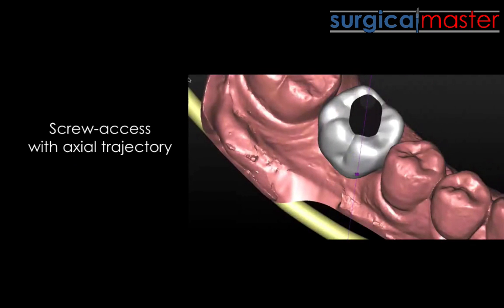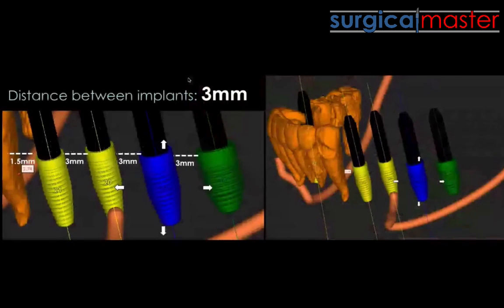I like to plan implants in a screw-axis trajectory, giving you the option to make the restoration retrievable with all the advantages that entails. When it comes to multiple implants, I program the software to warn me if I'm getting closer than three millimeters between implants — so 1.5 millimeters to an adjacent tooth and three millimeters between implants. These measurements can be so accurate in the system in a way that's humanly impossible by hand, and you can have all implants completely parallel in three dimensions.